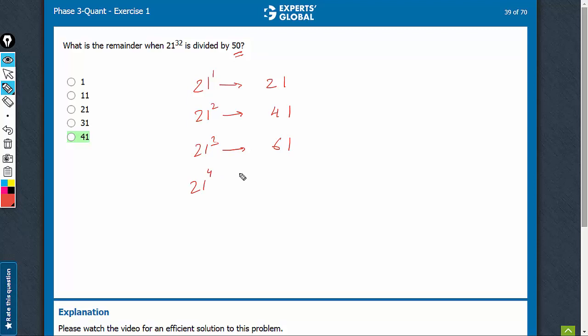21 raised to power 4, do 61 into 21. You get the last two digits as 81.